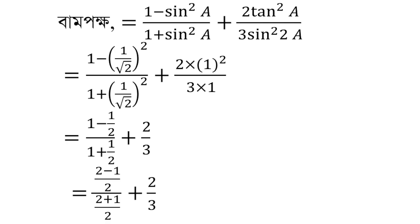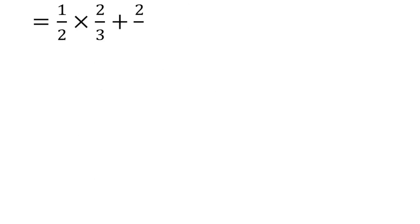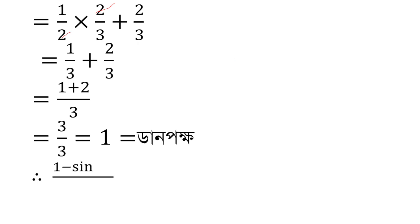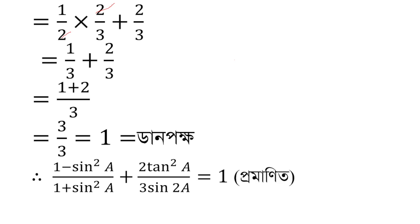I will give 2 minus 1; 2 minus 1 is 1. 2 plus 1 is 3. I will give 2 minus 2 by 3. 1 by 3 plus 2 by 3. I will give 3 minus 2 by 3. 1 minus 2 by 2 plus 2 by 3. 2 by 3 into sine 2a equal to 1.